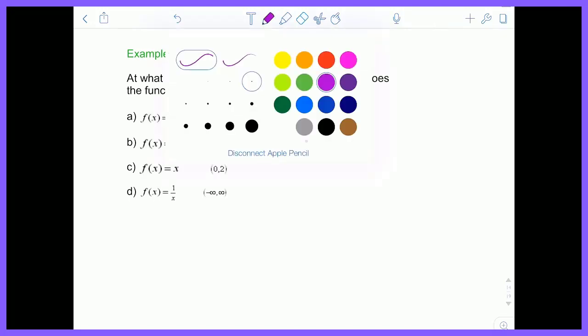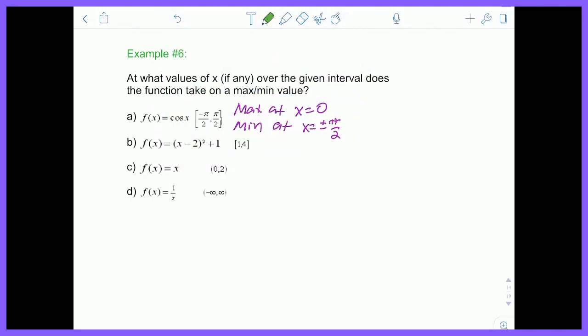Let's take a look at another example. This example, letter b, is a, looks like it's a quadratic function. It's in vertex form, so we could probably just throw in a graph real quick. So it's in vertex form, so its vertex is located at the coordinate 2, 1. So 2, 1 is like right here.